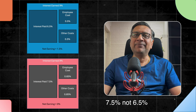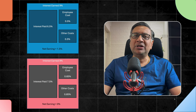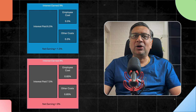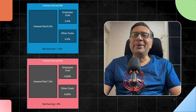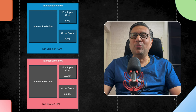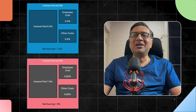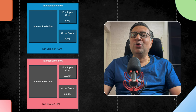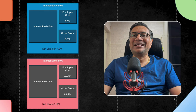Now suppose interest rates increase. The bank needs to give you six and a half percent for the FD, and employee and other costs have gone up due to inflation — 0.65 percent and 0.85 percent. If the bank charges the same nine percent on the home loan, net earnings become zero. To make one and a half percent again, the bank must charge ten and a half percent — giving one percent more on FDs but charging one and a half percent more on the home loan to maintain the same gain.